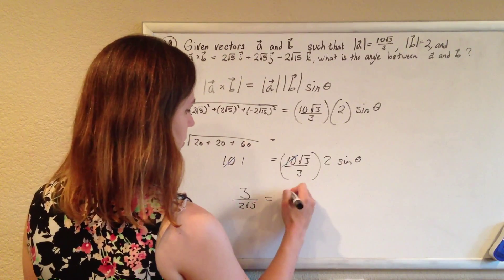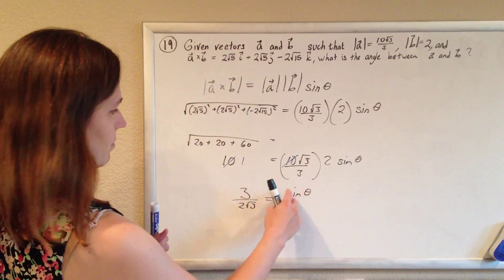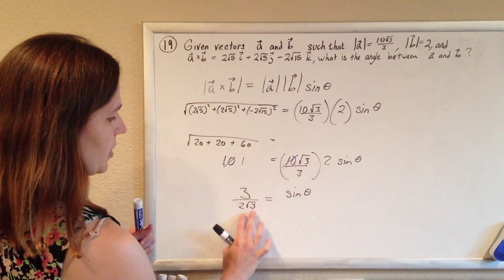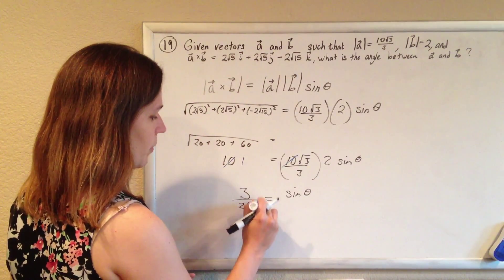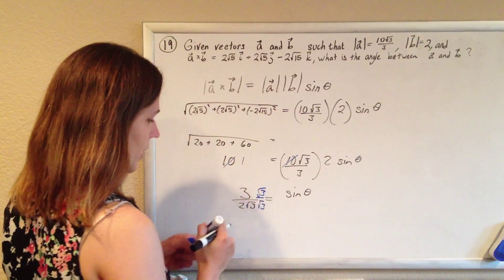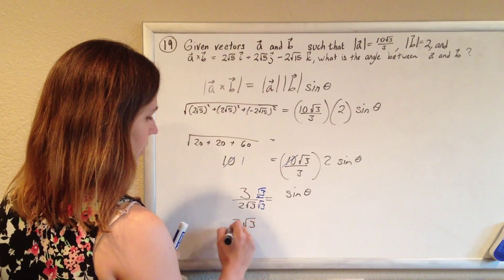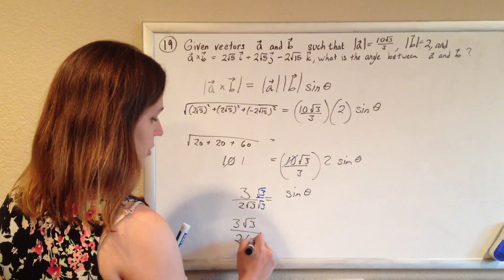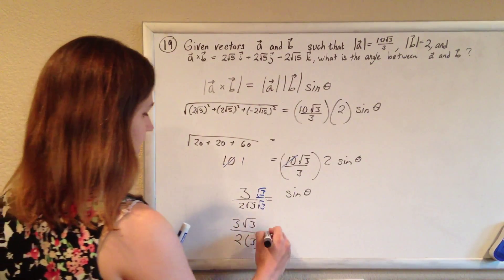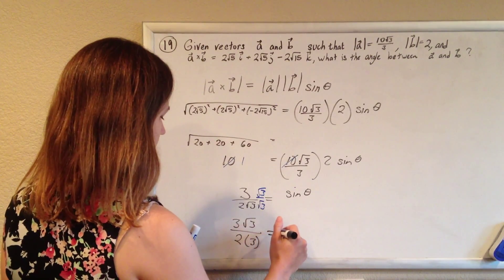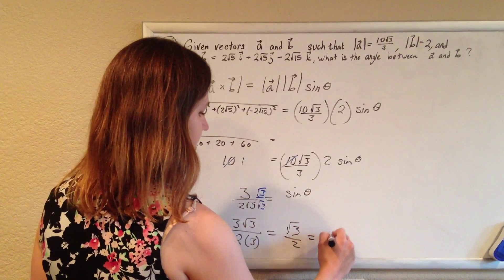So 3 over 2 root 3 will be the sine of theta, just multiplying by 3, dividing by 2 root 3. So you're like, I don't quite recognize that, so let's rationalize it. We'll multiply top and bottom by root 3, so we'll have 3 root 3 over 2 times 3, and those 3s will end up canceling out. So you just get root 3 over 2, and that equals the sine of theta.